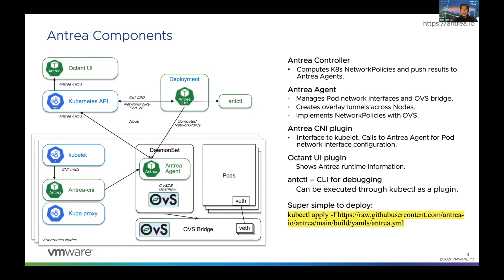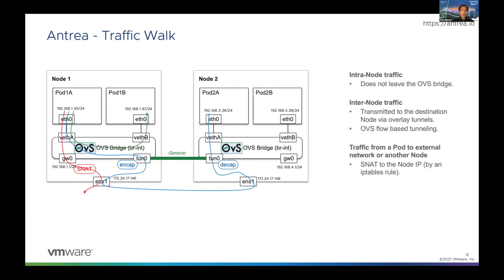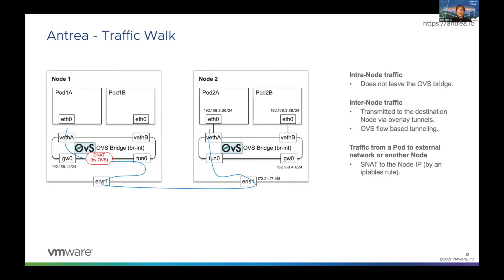The key differentiation between Antria and other CNIs — there are a lot of CNIs on the market. Why Antria? It's open source, for sure. They have two main components: the controller running on the master node, and the daemon set running on each worker node. Every single worker node has one daemon set running with the Antria agent. Those agents offload a lot of work — instead of going directly to Kubernetes like all the CNIs, our Antria uploads some work to the controller. Our controller becomes the API aggregator, allowing you to offload a lot of work from the Kubernetes API. That makes it much faster.